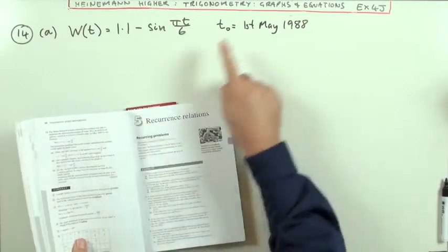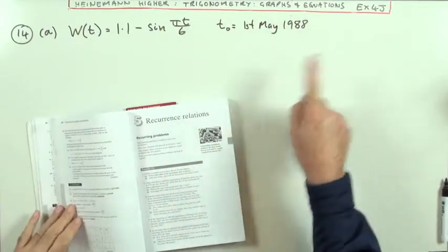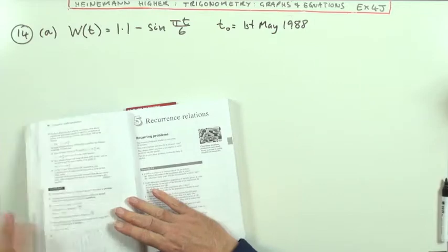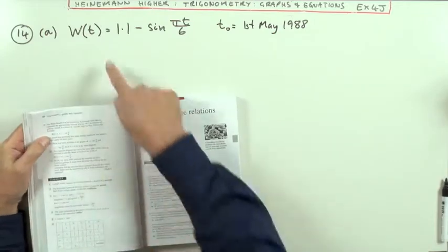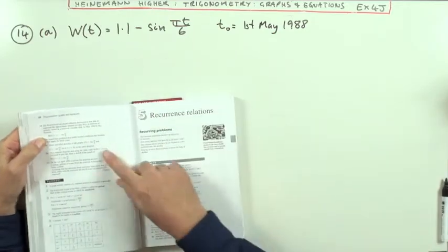I'm in Higher, Chapter 4, Trigonometry Graphs and Equations, the last exercise, exercise 4G, and the last question, question 14, another modelling equation.